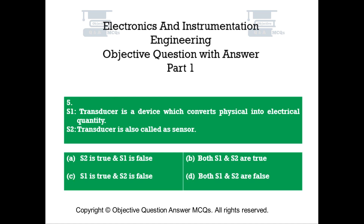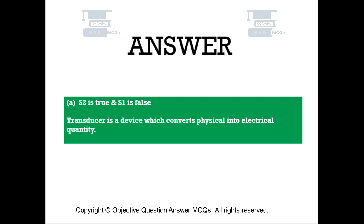Question number 5. S1 — A transducer is a device which converts physical into electrical quantity. S2 — A transducer is also called a sensor. Option A: S2 is true and S1 is false. Option B: Both S1 and S2 are true. Option C: S1 is true and S2 is false. Option D: Both S1 and S2 are false. The right answer is Option A — S2 is true and S1 is false. A transducer is a device which converts physical into electrical quantity.